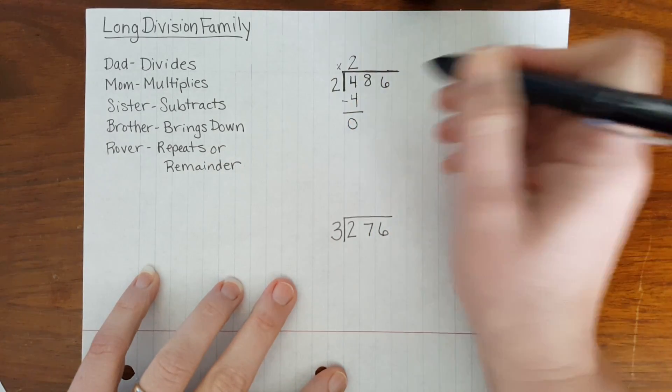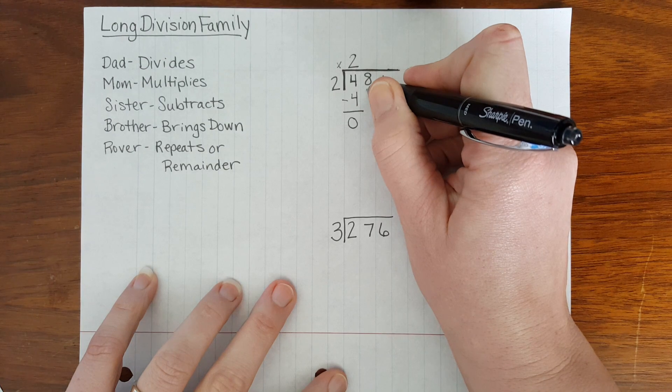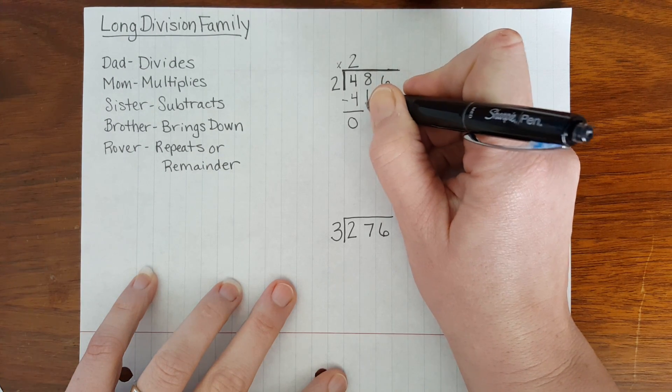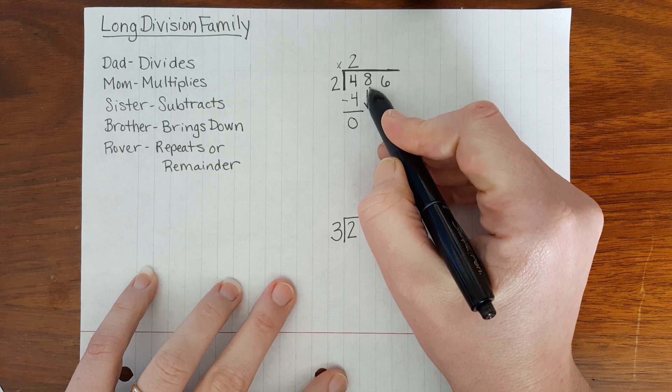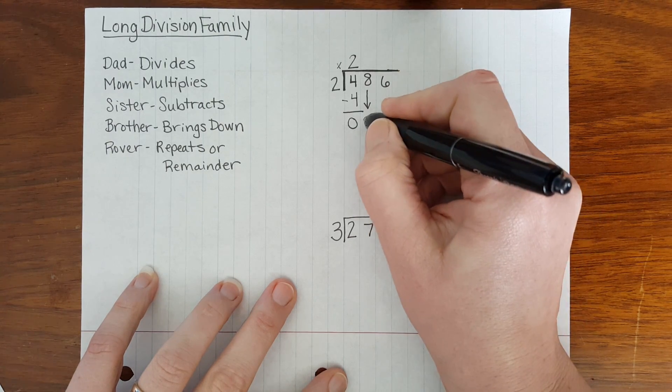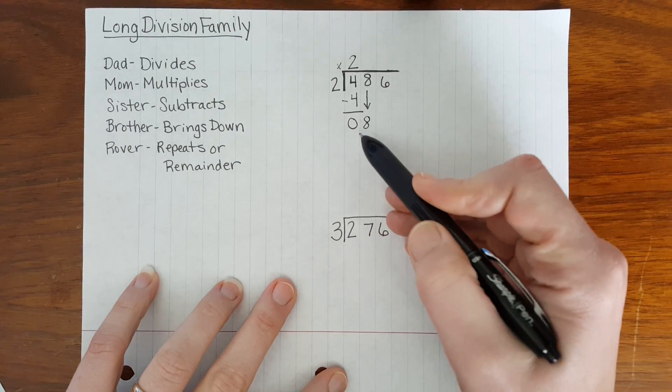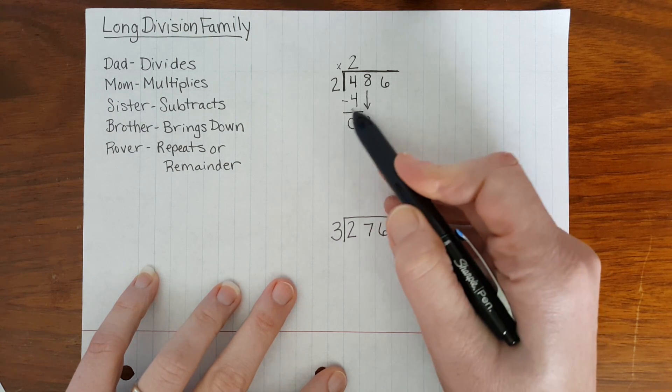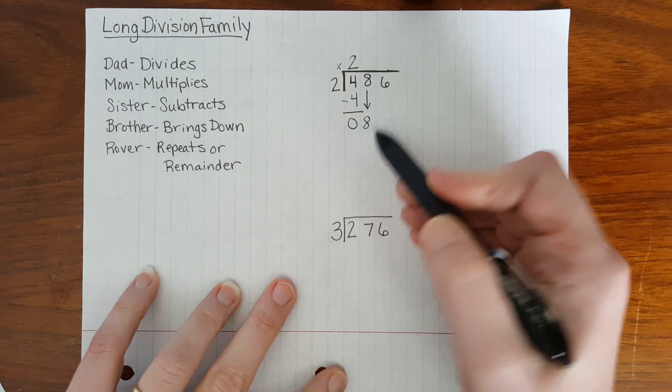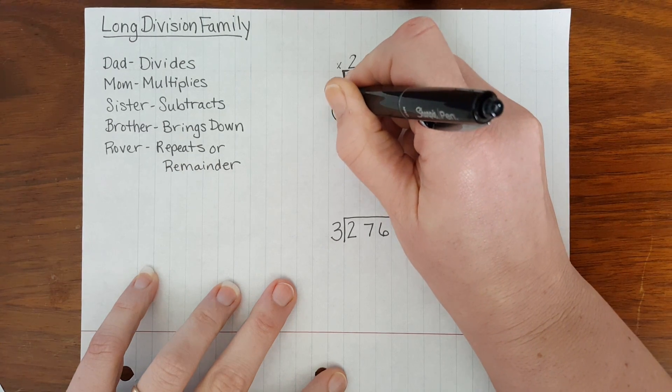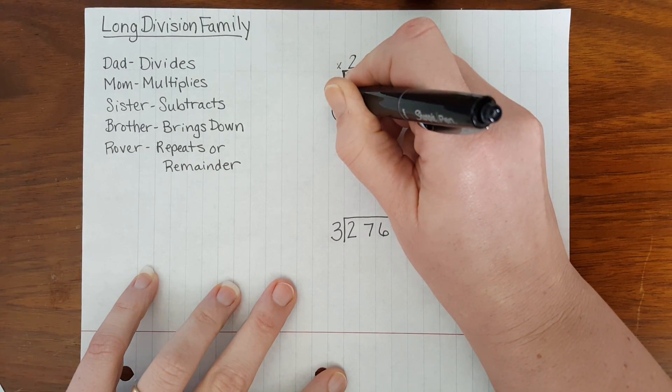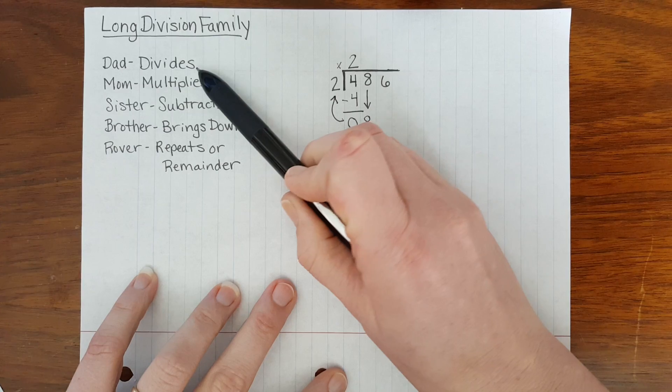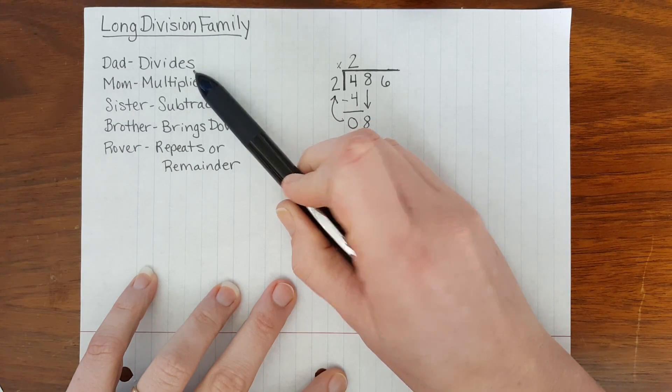And brother brings down. He slides the next number, 8, which is in our dividend, down next to the answer that sister found. Rover then takes this number brother helped create and repeats. He takes it back up so dad can start our process all over with dividing.